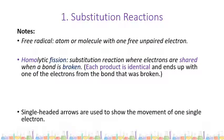A key word that you'll see a lot is 'free radical.' The definition of a free radical is that it's an atom or molecule with one free unpaired electron. You will recognize these as the symbol for an element with a dot — that's how a free radical is presented.